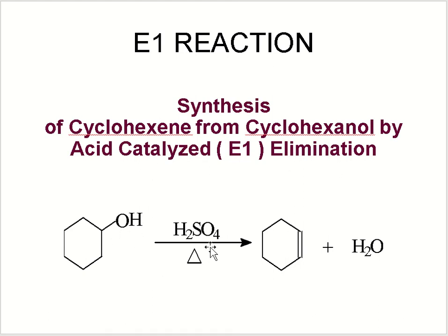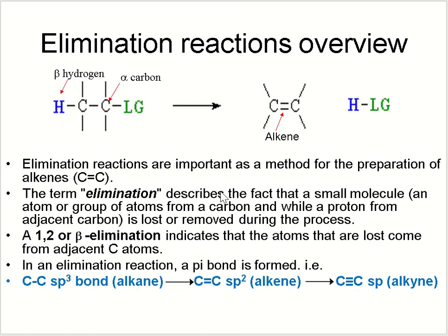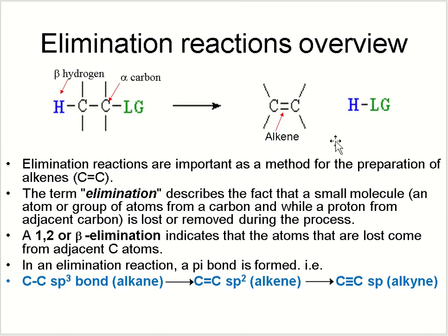In cyclohexanol, the alpha carbon carries the leaving group and the beta carbon has a hydrogen. When the hydrogen on the beta carbon leaves along with the leaving group on the alpha carbon, an alkene is formed. This elimination is very important for the preparation of alkenes.